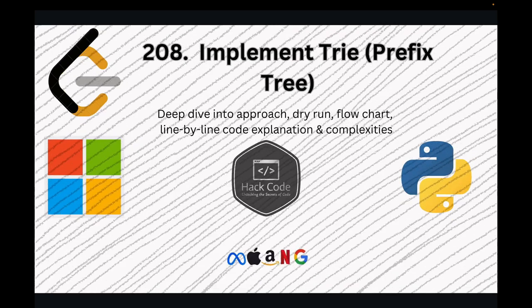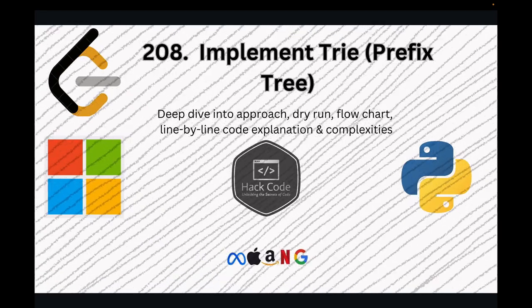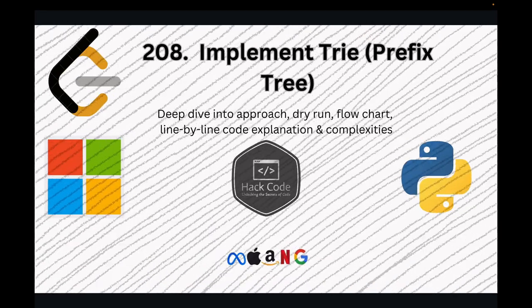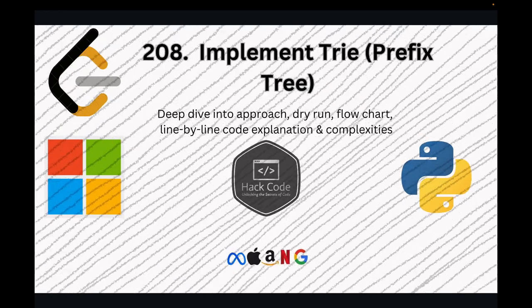Welcome back to HackerRank. In this video, we're going to implement a trie, also known as a prefix tree, in Python. This data structure is extremely useful for tasks like autocomplete systems and spell checkers. We'll explain what a trie is and how it differs from a traditional tree, guide you through the implementation step by step, and discuss complexity analysis and use cases for tries.